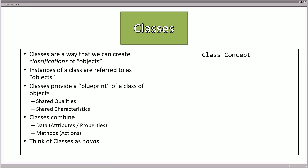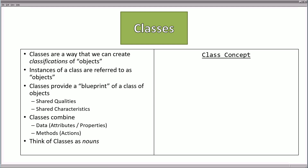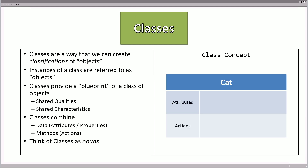To best explore this concept, let's take a classification of objects most people would be familiar with — let's classify a cat. If we create this classification called a cat, we need to think about what attributes to assign to it — what information do we want to keep track of for each instance. One attribute is a name; we could say these cats have names. Maybe we also want to track the cat's weight, and the number of legs the cat has.